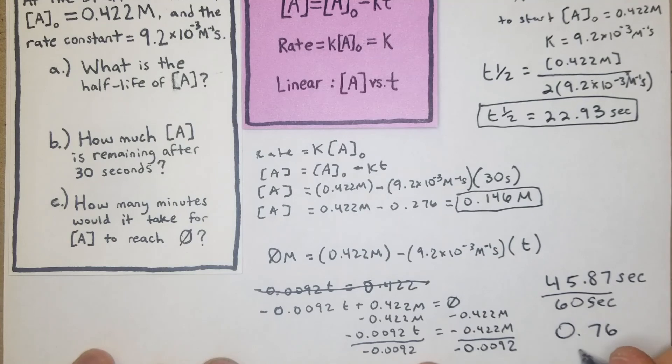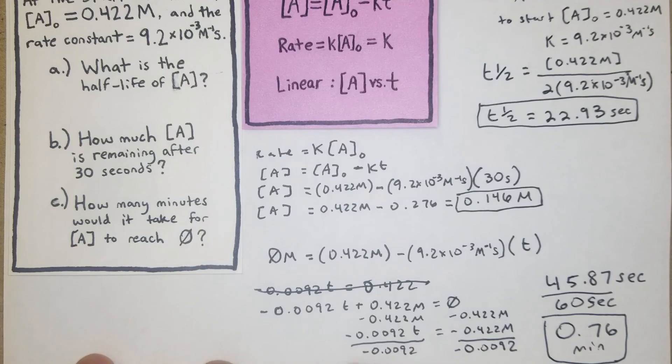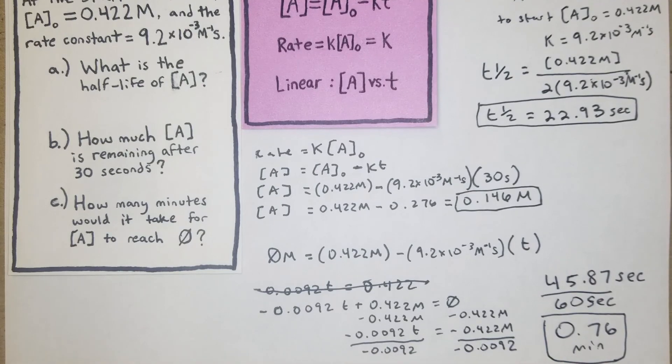So we have 45.87 divided by 60 equals 0.76 minutes.